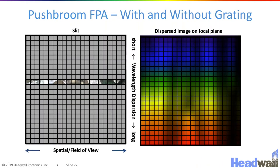In this way we fill up the entire focal plane in one dimension with spatial information and in the other dimension with spectral information. The figure on the left is what the scene would look like without a diffraction grating, and the figure on the right shows what the image on the focal plane looks like after the light is dispersed, moving the blue light to a different spatial location than the red light and creating a bundle of spectrometers in a single package.